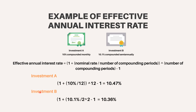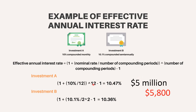And for investment B, it would be: (1 + 10.1% / 2) to the power 2, minus 1, equals 10.36%. Investment B has a higher stated nominal interest rate, but the effective annual interest rate is lower than the effective rate for investment A. This is because investment B compounds fewer times over the course of the year. If an investor were to put, say, $5 million into one of these investments, the wrong decision would cost more than $5,800 per year.